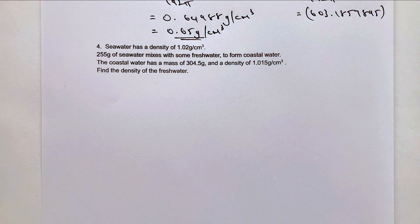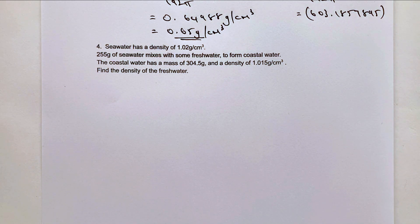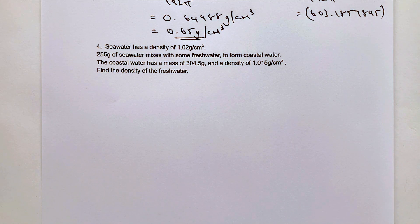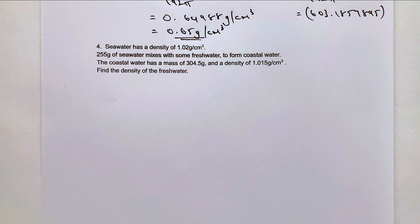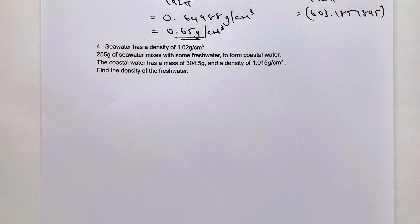Seawater has a density of 1.02 grams per centimetre cubed. 255 grams of seawater mixes with some fresh water to form coastal water. Coastal water has a given mass and a given density — find the density of the freshwater. We're going to apply the density equals mass divided by volume formula for all three components: seawater, freshwater, and coastal water.